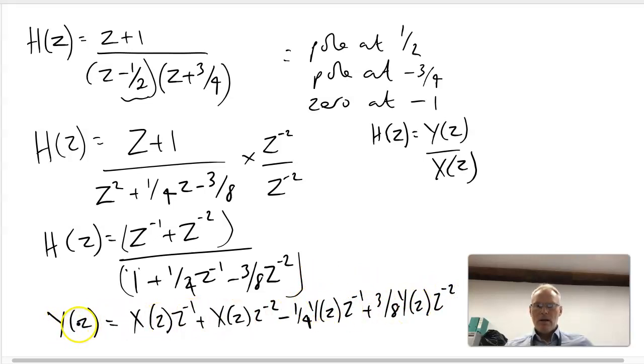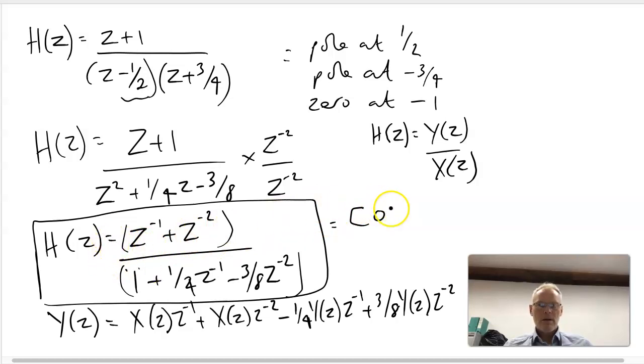This becomes a positive plus three eighths Y(Z) Z minus two. And there we have it. We can evaluate Z by substitution to e to the j omega. We can evaluate this expression directly to come up with a phase and magnitude response, but we can also obtain the filter coefficients by inspection of this form because we've got the feed forward terms here and we've got the feedback terms here.